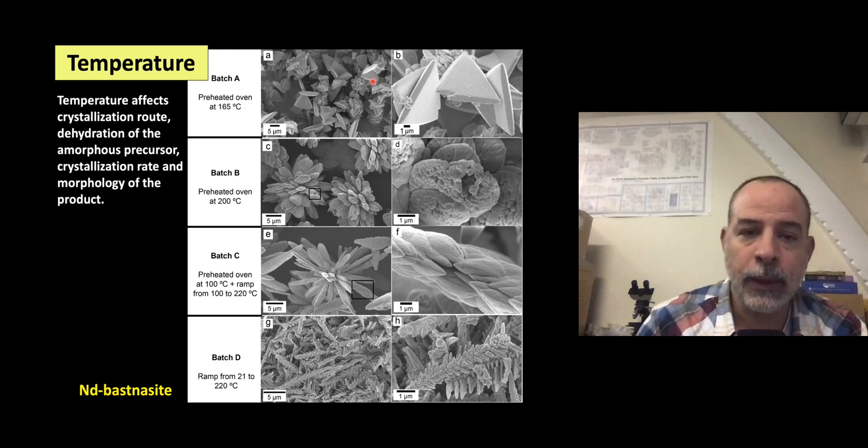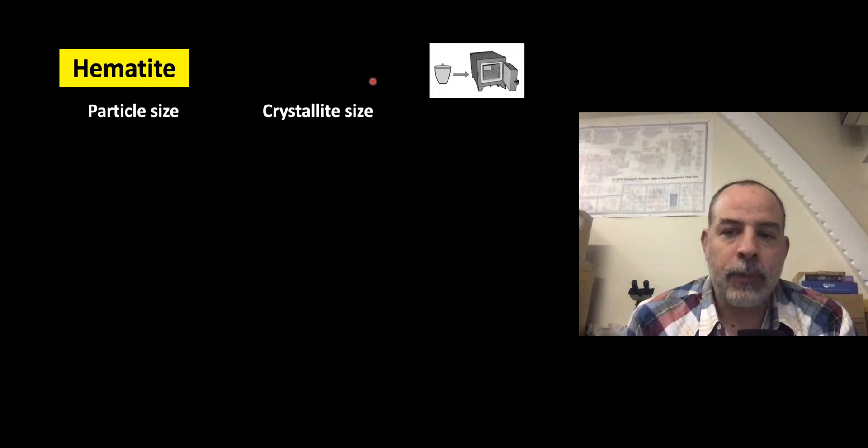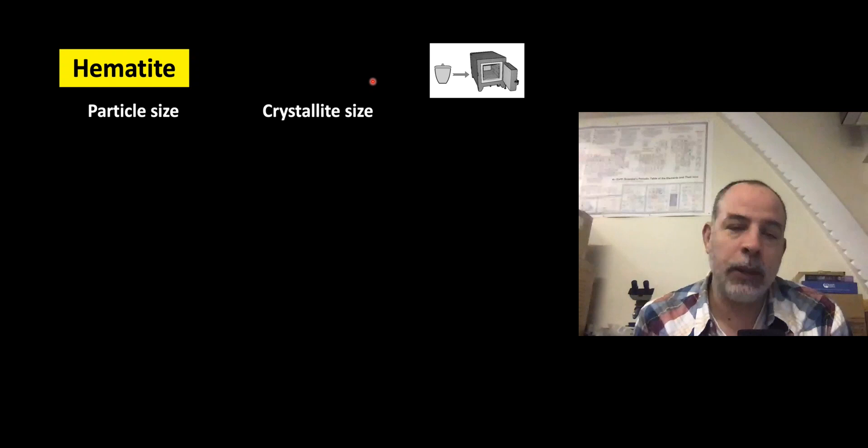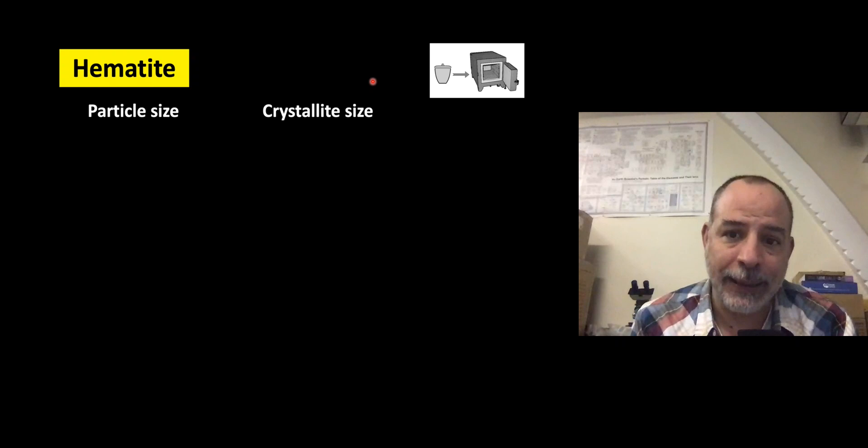I will give you some other examples very quickly. Hematite is a mineral that can be easily produced, but the properties depend on temperature. You can produce hematite at 300, 600, or 1000 degrees C, but the properties will be different depending on synthesis temperature, because of one important parameter: crystallite size.